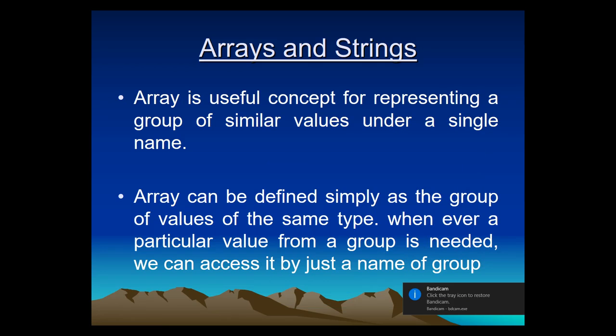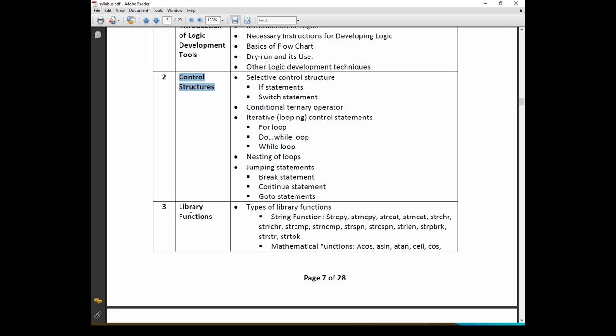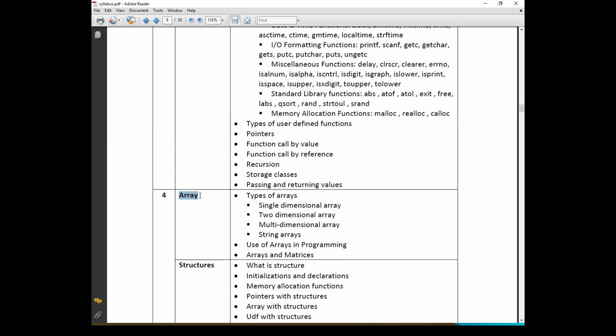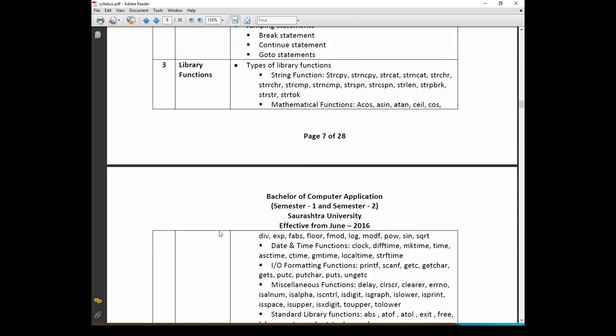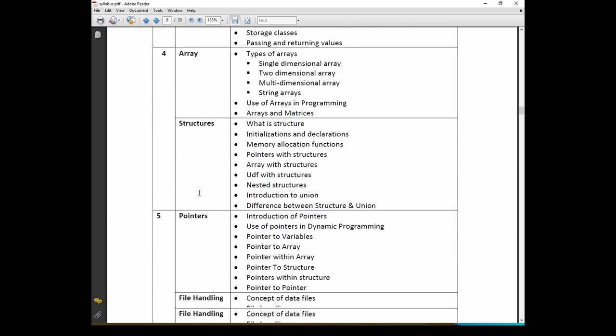Good morning students, welcome to another session of our subject programming in C. We have completed the discussion of unit number two, that is control structures. Now we are starting with unit number four, that is array and structure. This particular unit is an intermediate stage of our subject. Generally in all subjects there are three stages: beginning, intermediate, and advanced. We have completed the beginning phase and are now entering the intermediate stage.